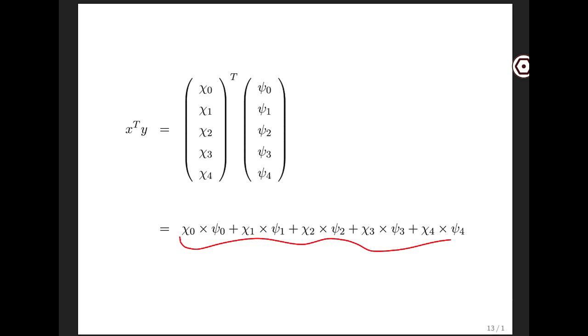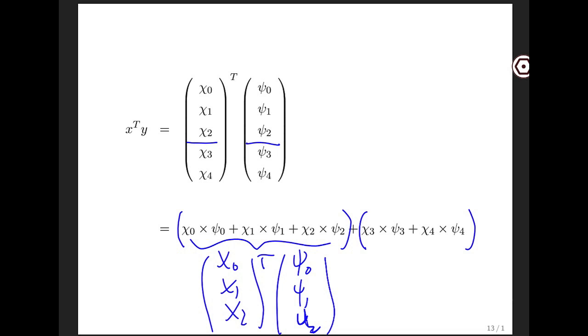Now, we can do this more generally. If we are given two vectors x and y, we can think of those vectors as the individual components. Computing the dot product then gives us this expression right here. And if we partition these two vectors, then that's the same as putting parentheses around these terms. And this part on the left is just chi0, chi1, chi2, dot product with psi0, psi1, and psi2. And this part right here is the inner product of chi3, chi4 with psi3, psi4.